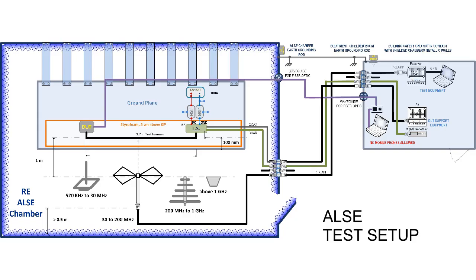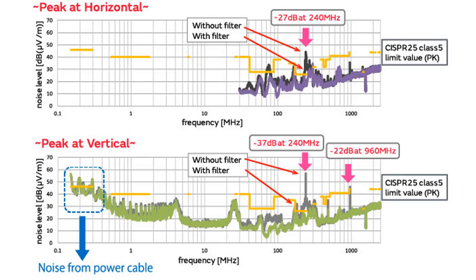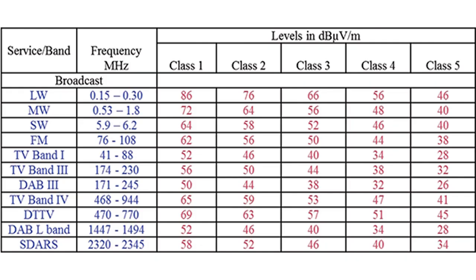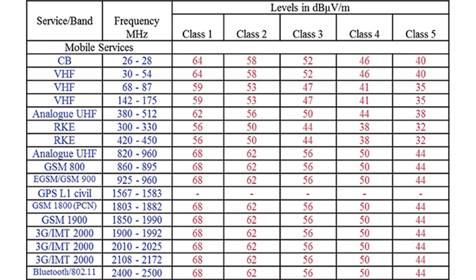Now we will discuss radiated emissions measurements by ALSE measurement, CISPR 25. Radiated emissions measurements are performed in the frequency range 150 kHz to 2.5 GHz. Peak limits for broadcast bands are shown in figure. While the peak limits for mobile services are shown in figure.